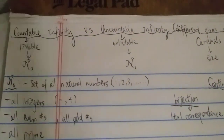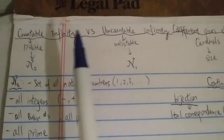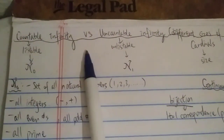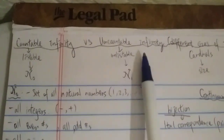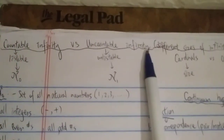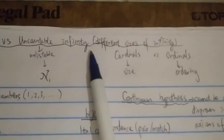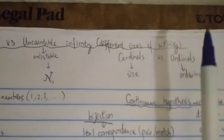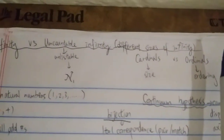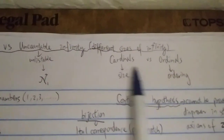Hi everyone. Today we're going to talk about countable infinity versus uncountable infinity. As you know, there are different sizes of infinity. In this video, we're going to talk about cardinals, not ordinals.